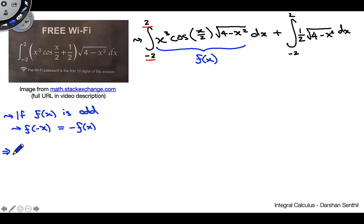So let's do that. So we have f of negative x is equal to negative x cubed cosine negative x over 2 square root of 4 minus negative x squared. And now we can just go ahead and simplify this a bit more. Negative x cubed is just going to come out to negative x cubed because you have the extra negative sign because of the odd power here.